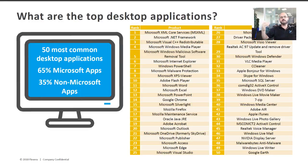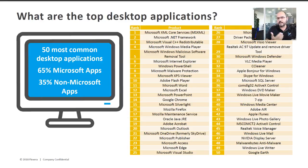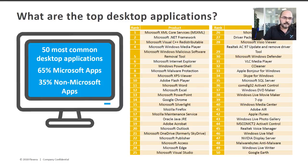We look at that data and focus on the 50 most common applications in those Windows systems. We know, for example, that amongst those 50 most common applications, 65% are Microsoft applications and 35% are non-Microsoft applications. The full list is in the report, which is already live — you can download it using the link in the description of this video.